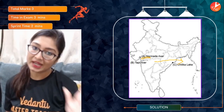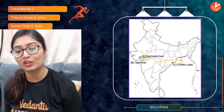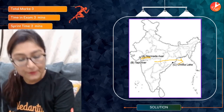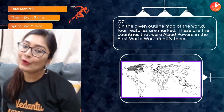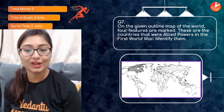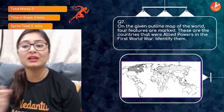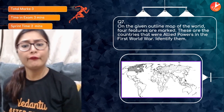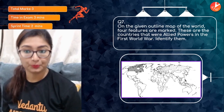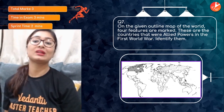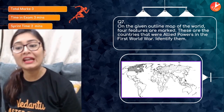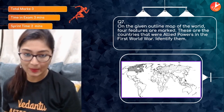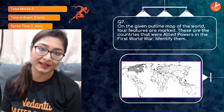Moving on: on the given outline map of the world, four features are marked — these are the countries that were Allied Powers in the First World War. There are two blocks. We know that after the war, the League of Nations was formed.